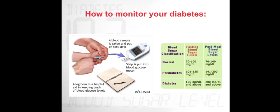Diabetes is monitored by checking blood sugar levels in two stages: fasting blood sugar level, which is checked before eating anything, and post-meal blood sugar, which is checked after eating a meal. By comparing these levels to a reference chart, we can determine whether a patient is diabetic or not. Thank you.